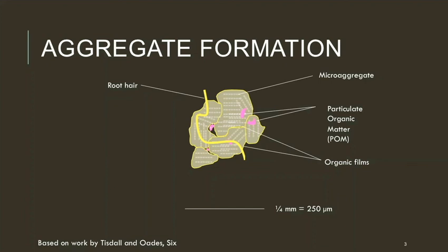Particulate organic matter can occur either inside or outside of aggregates. My macro aggregate is made up of smaller blobs — micro aggregates. Inside those, I represented clay particles as little horizontal stacked bars. Essentially there are organic films holding things together. The particulate organic matter may also become covered with sticky bacterial or root exudates and hold things together. Root hairs are important in larger aggregates, and fungal hyphae and other stringy structures may also be physically holding things together like string.